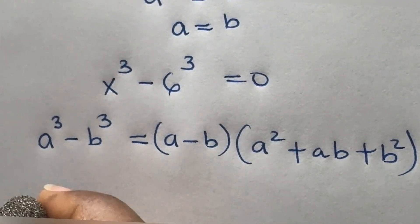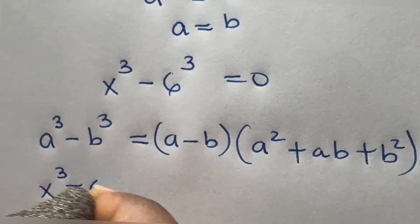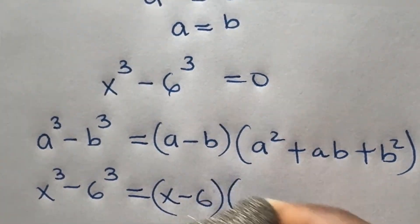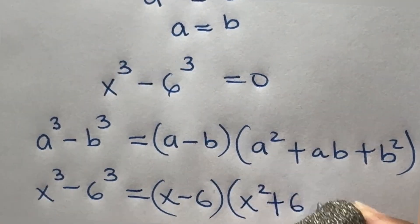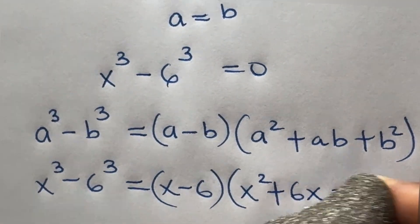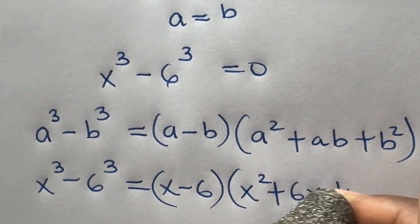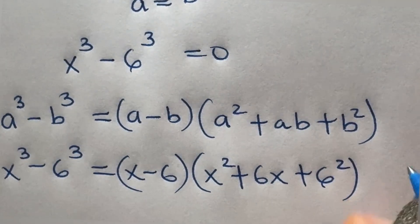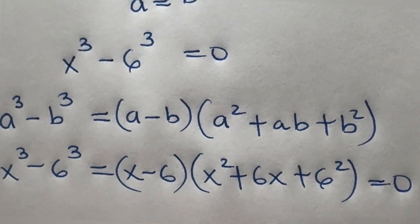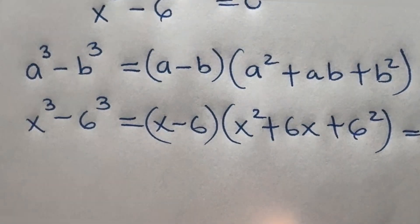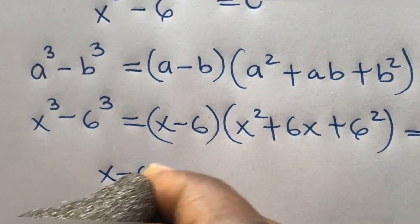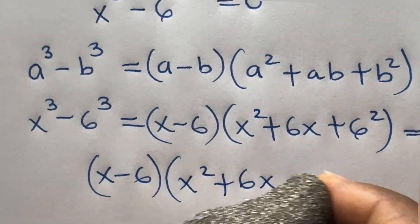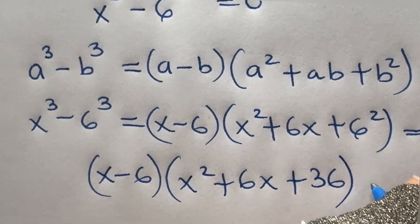Therefore, x raised to power 3 minus 6 raised to power 3 gives us x minus 6 times x squared plus 6x plus 6 squared, which is x squared plus 6x plus 36. This is equal to 0, so we write: x minus 6 times x squared plus 6x plus 36 equals 0.